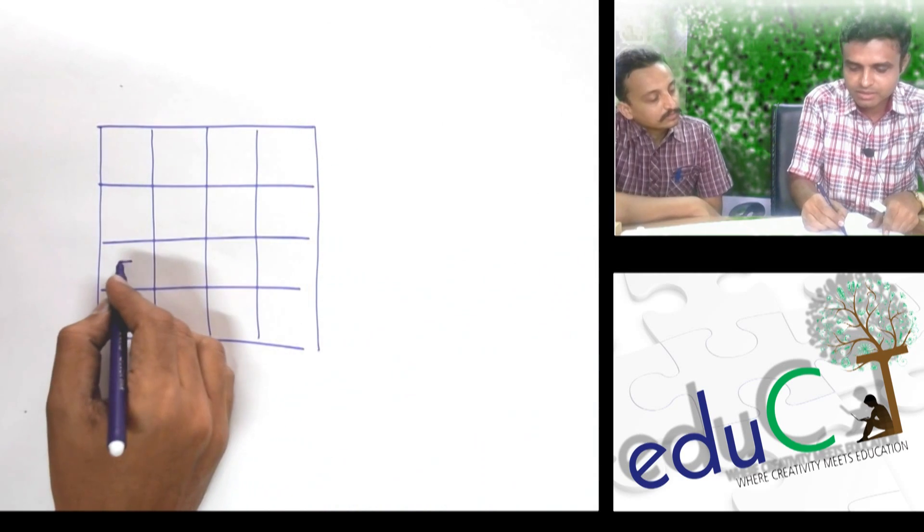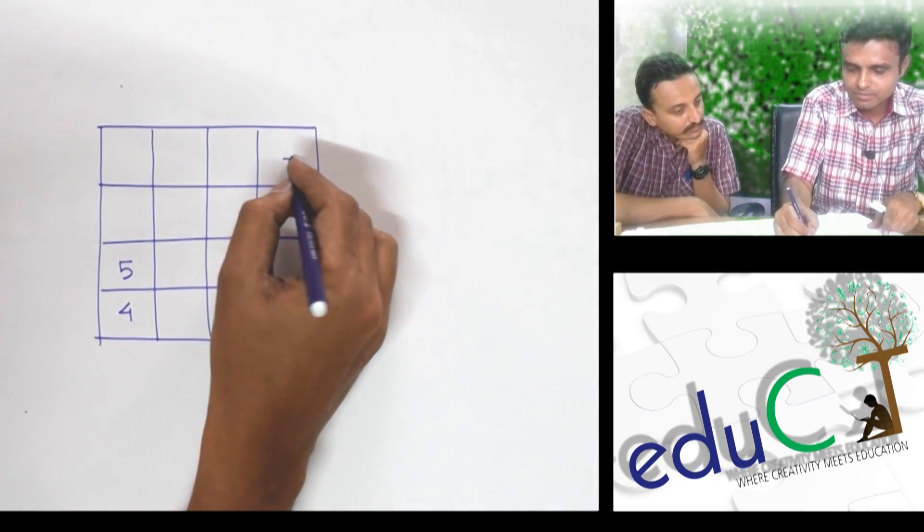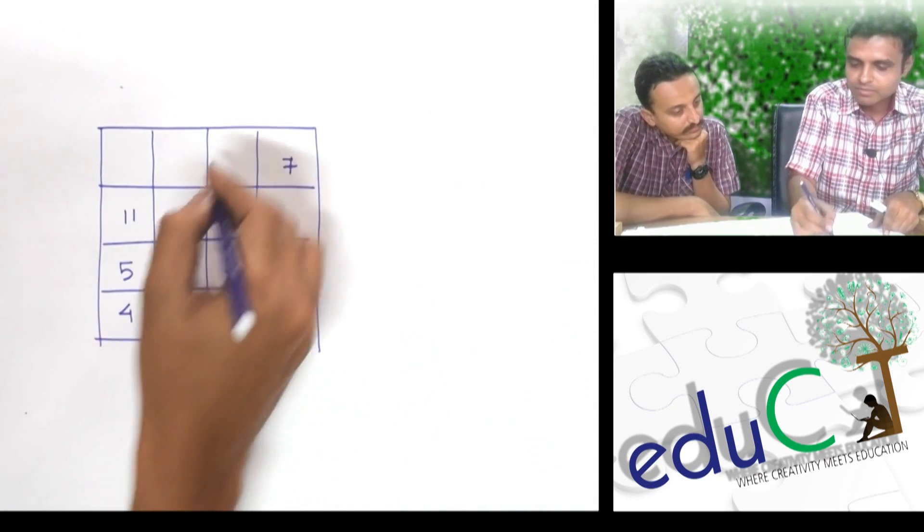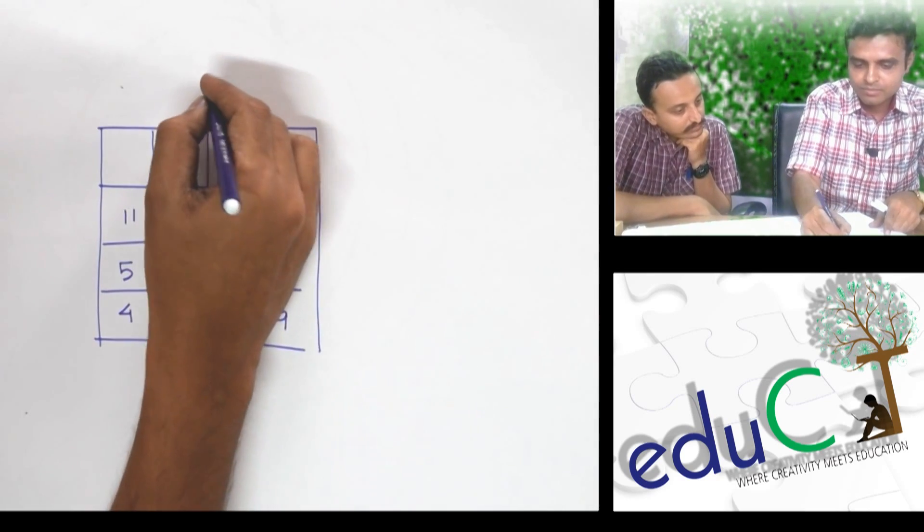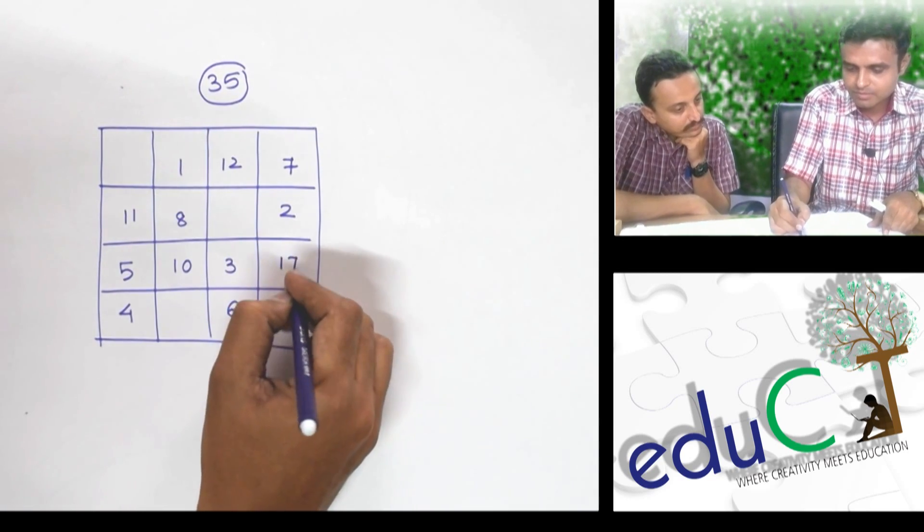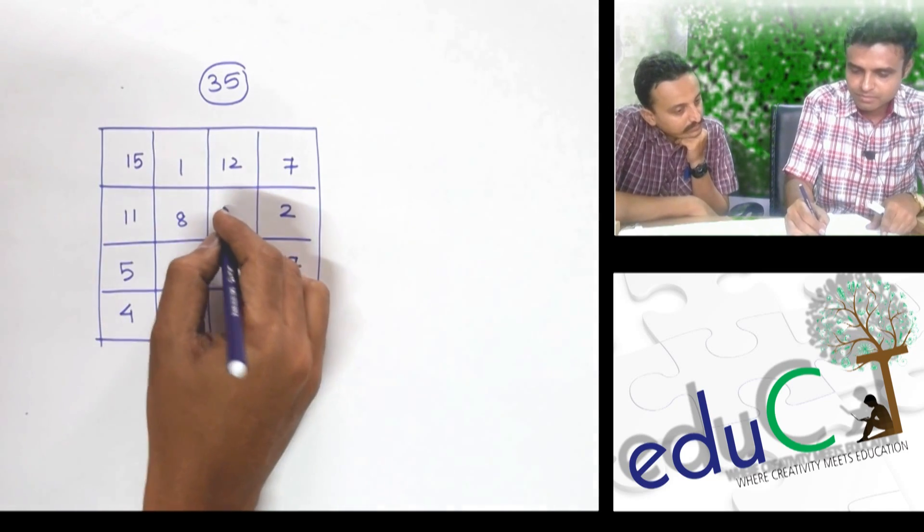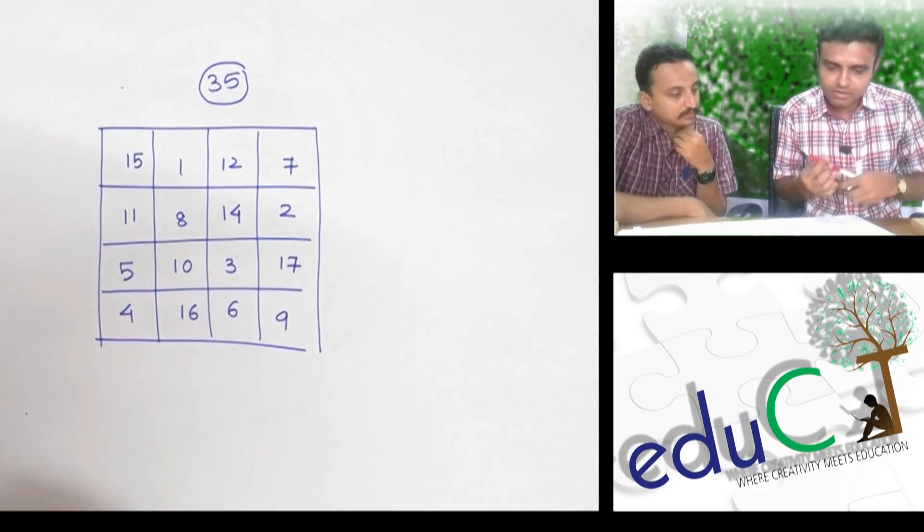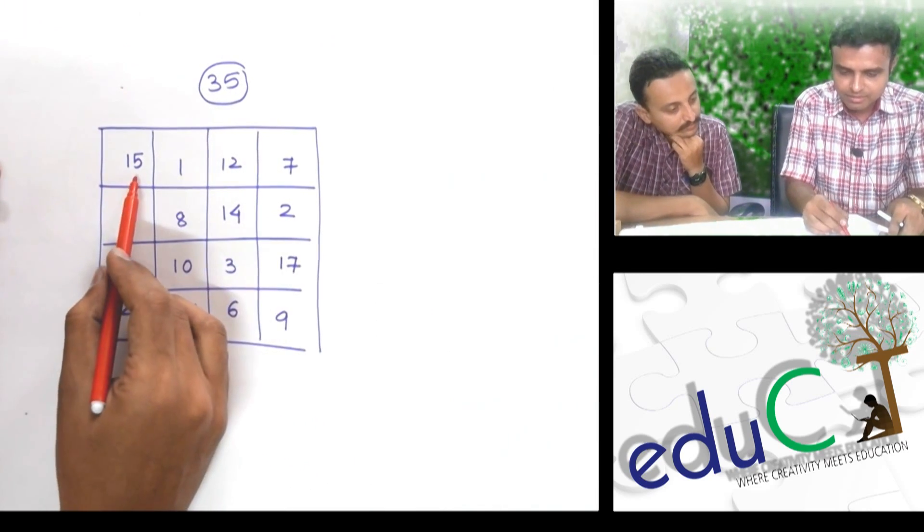So, this is 4x4 magic square. This is 4x4 magic square. Okay. It is ready. Check it.